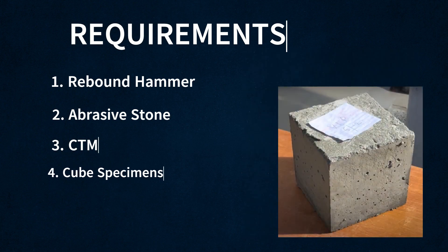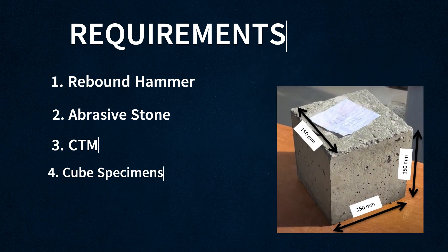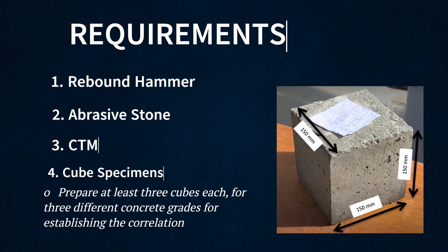The specimen should be a cube of 150 mm side length. It is necessary to test at least three cube specimens for three different grades of concrete to establish the correlation.